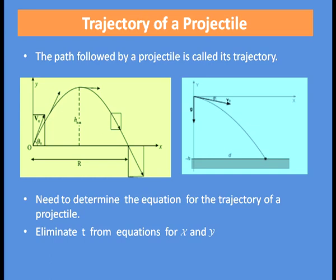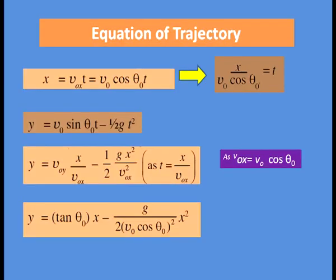The distance covered in the horizontal direction is x = Vox · t = V0 cos θ₀ · t. Simplifying, we get t = x / (V0 cos θ₀). Putting this value of t into the equation for y, the distance covered in the vertical direction: y = V0 sin θ₀ · t − ½·g·t².